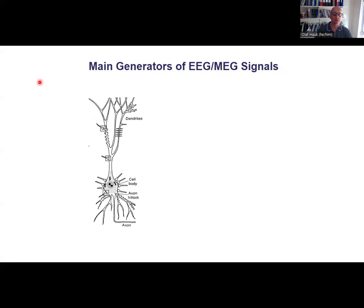So what are the sources or generators of the EEG and MEG signals? It all starts with individual neurons, even though of course we can't measure the activity of individual neurons with these non-invasive methods outside the head.